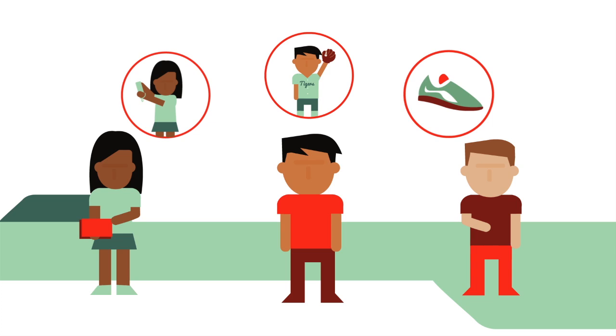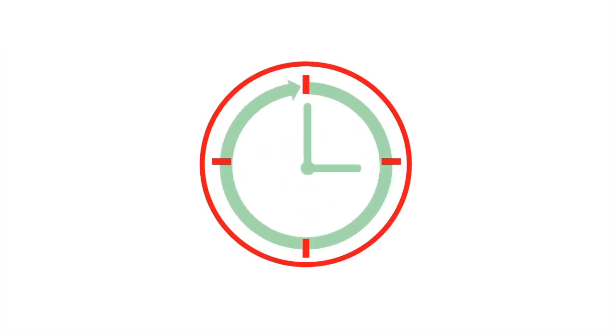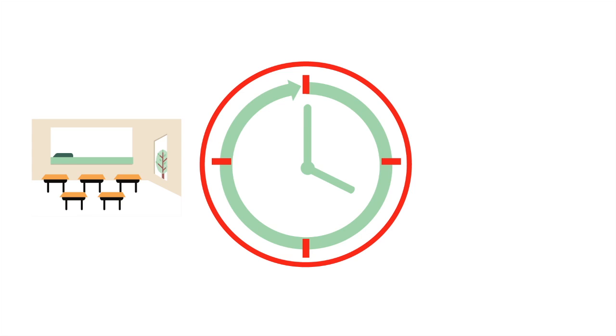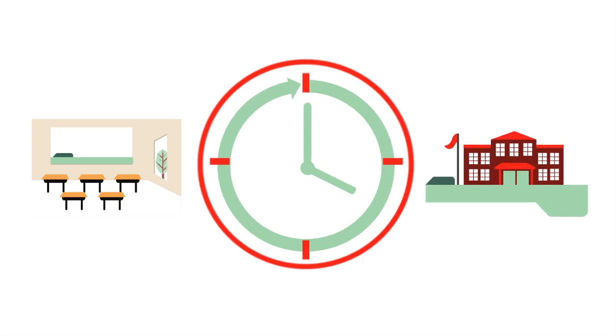The Institute of Medicine recommends a whole-of-school approach to physical activity, allowing for at least 60 minutes per day of activity that is vigorous or moderate intensity where at least half is accomplished during regular school hours and the other half occurs in the school environment.